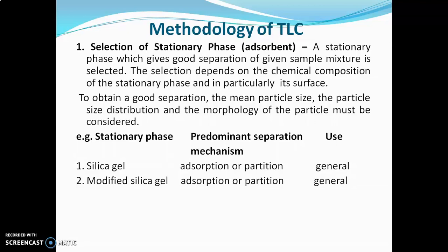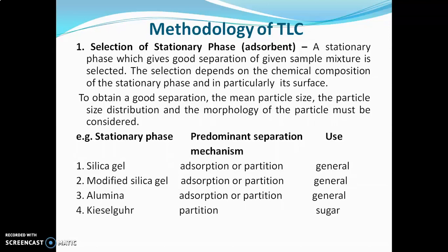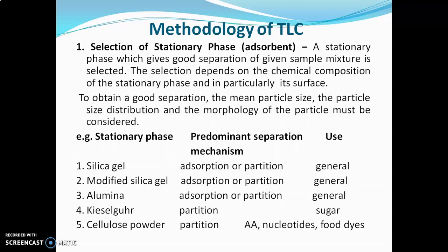Next is modified silica gel, again used for all types of samples. Alumina — the mechanism of separation is adsorption or partition — and it is used for all types of samples. K-silger — the mechanism of separation is partition — and it is used for separation of amino acids, nucleotides and food dyes. So these are a few examples of stationary phases used in thin layer chromatography.